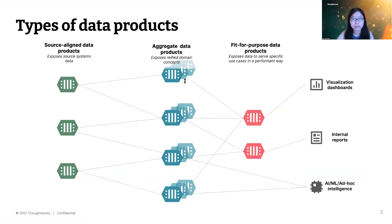In the middle, we have aggregate data products that can be multiple layers, exposing aggregates in the DDD sense — generally three to five domain concepts — while abstracting away the source systems they're getting data from. Each of these data products encapsulates more than just data: transformation typically in the form of code, data, as well as policy in a broad sense — security policy and SLOs like timeliness.